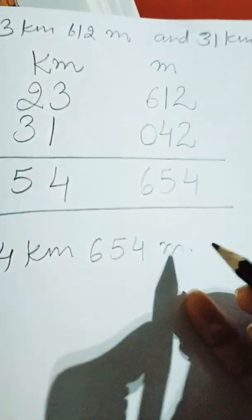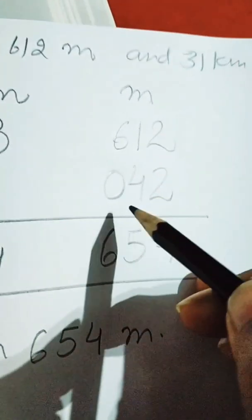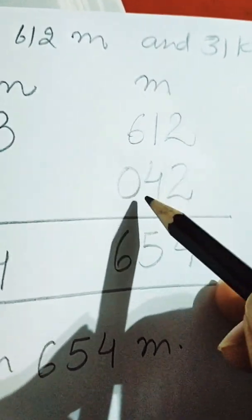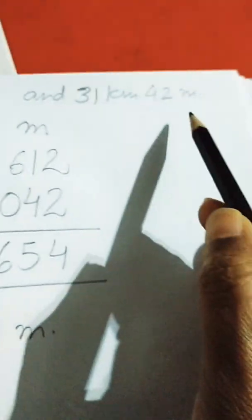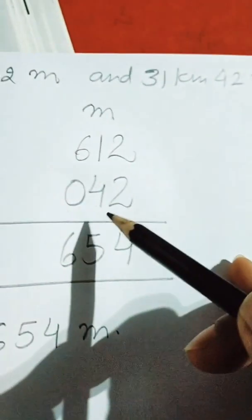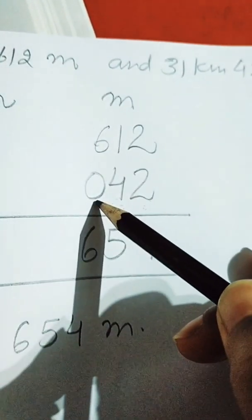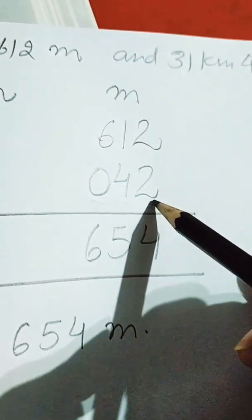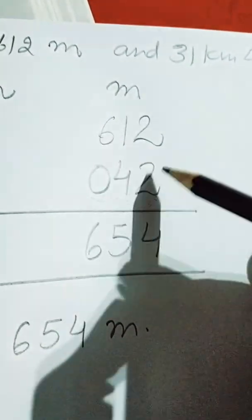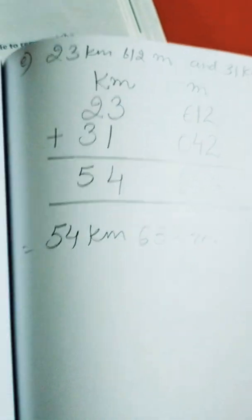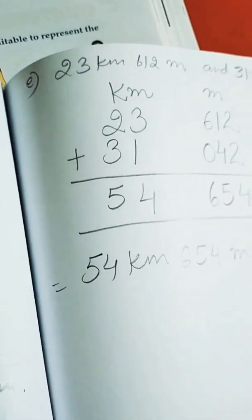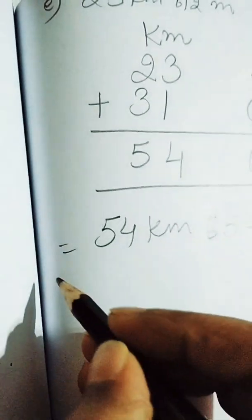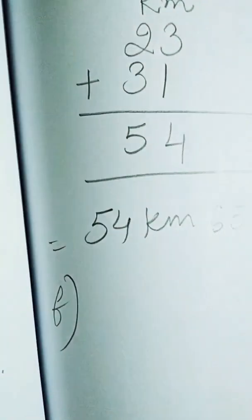See here carefully how we have completed the 3 digits. The statement was 42, and we have to write 42 here — we put a 0 in front to complete 3 digits, making it 042. After that we add them. Now let's see part f.